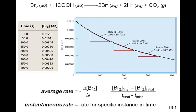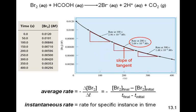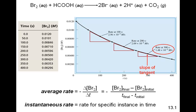We can also determine the instantaneous rate, which is the rate at a specific instant in time. To find it, we pick a particular time — say 100 seconds — draw a line tangent to that point on the curve, and find the slope of that line. The slope of the tangent line gives us the instantaneous rate. If this were a calculus-based course we'd use calculus, but here we just do this graphically. The rate at 200 and 300 seconds decreases over time as the amount of Br2 is also decreasing.